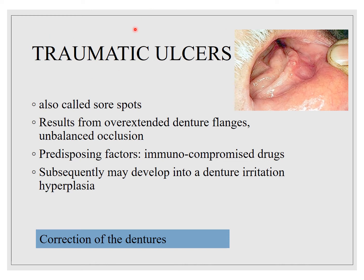Coming to traumatic ulcers — sore spots are very commonly seen, caused by overextended denture flanges or unbalanced occlusion. Predisposing factors include immunocompromising drugs. These may develop into denture irritation hyperplasia. Treatment involves correction of the denture, trimming any overextension, and prescribing gel for pain relief if required.